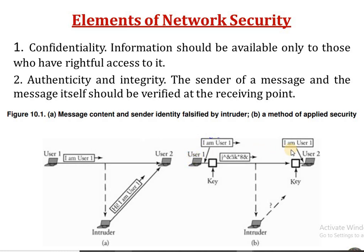In the second diagram, User 1 also wants to send a message to User 2, but authentication, integrity, and confidentiality have been provided through a key mechanism. User 1 has a key for encryption and User 2 has a key for decryption. User 1 encrypts the message before sending it into the network. Even if the intruder gets the message, without the key they cannot decrypt it, so security, authenticity, confidentiality, and integrity are all provided.